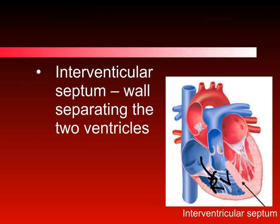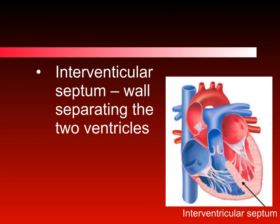The walls of the ventricles are much thicker compared to the walls of the atria. The reason for that is that the ventricles need to create force to pump the blood out of the heart. The wall separating the two ventricles is the interventricular septum.